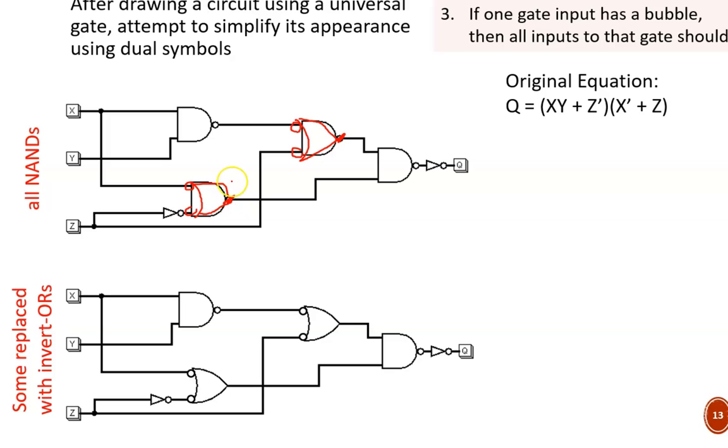Now looking at this top wire, I see a double bubble. This is great, so no changes here. At this point, all of the NAND gates have been examined, so my work was complete. What about this NOT gate? There is no dual symbol for a NOT gate. You can't apply De Morgan's theorem on a single variable, and so any NOT gates remain.